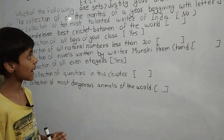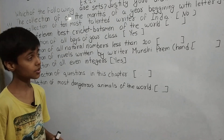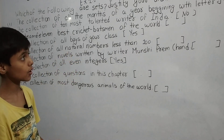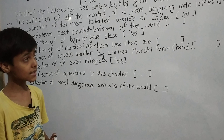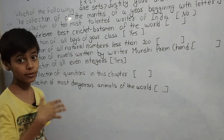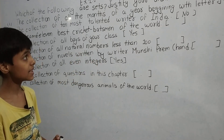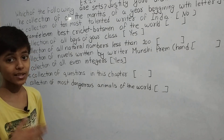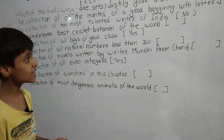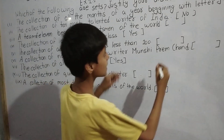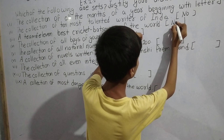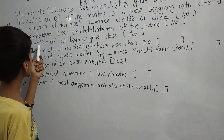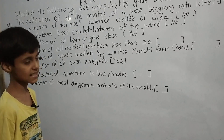Part (iii): A team of 11 best cricket batsmen of the world. This is also not a set because it may vary from person to person. I may say Virat is the best batsman; you may say someone else. Since it varies from person to person, it is not a set.